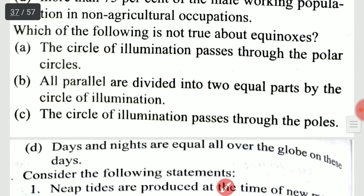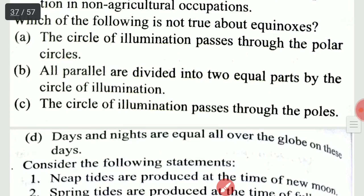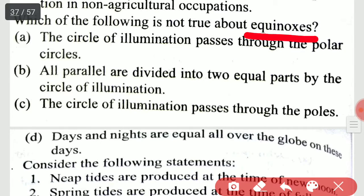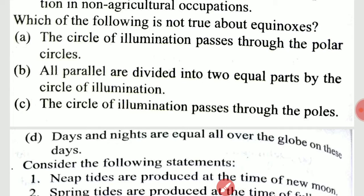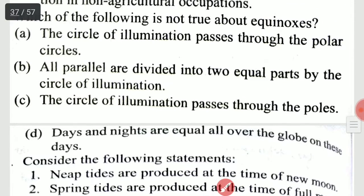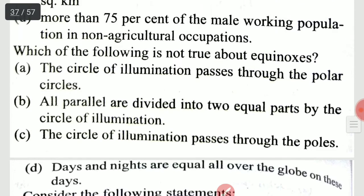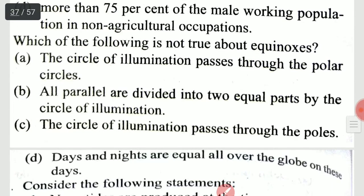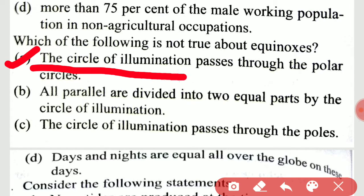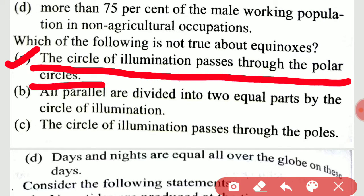Which of the following is not true about equinoxes? It is option A. The circle of illumination passes through the polar circles.